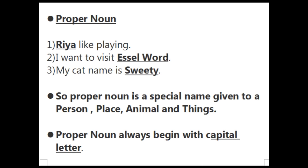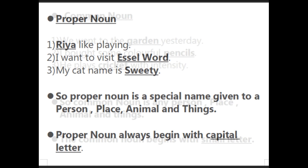So proper noun is a special name given to a person, place, animal and thing. Proper noun kya hota hai — jaise humne ye teen sentences mein dekha, yeh sab ko special name diya jata hai, to usko proper noun bolte hain. And proper noun always begins with a capital letter. Aapko ye teeno words mein dikhega — first alphabet is a capital letter, word ka beginning capital letter mein hi hoga.